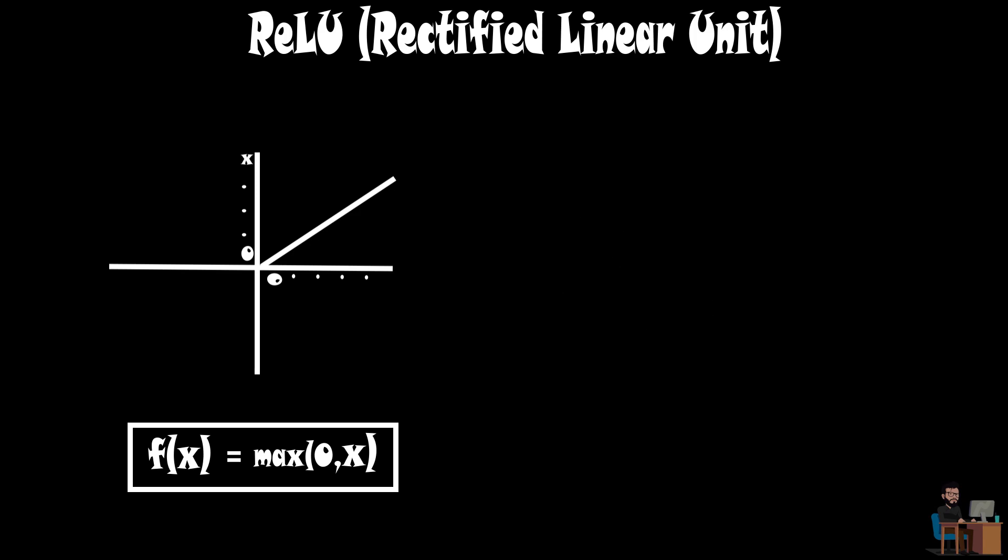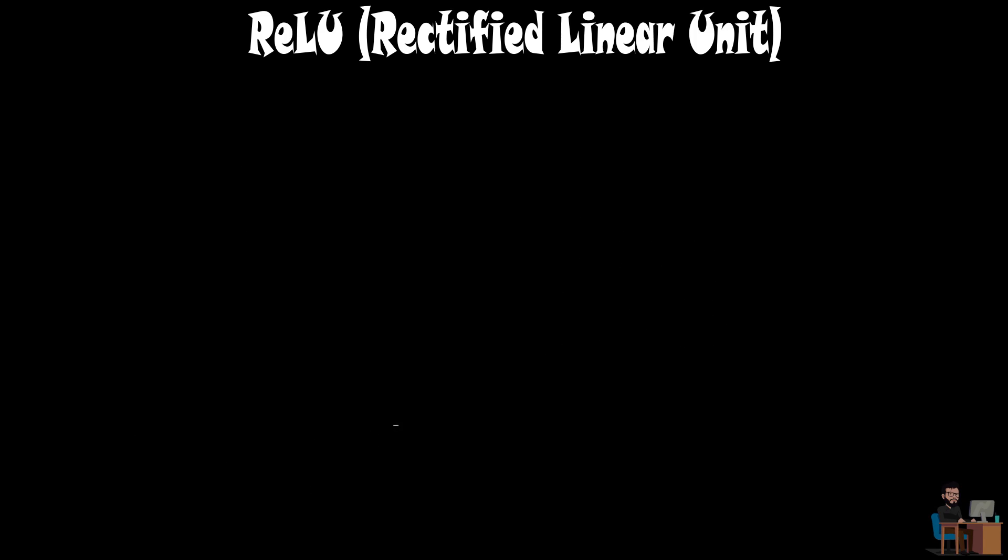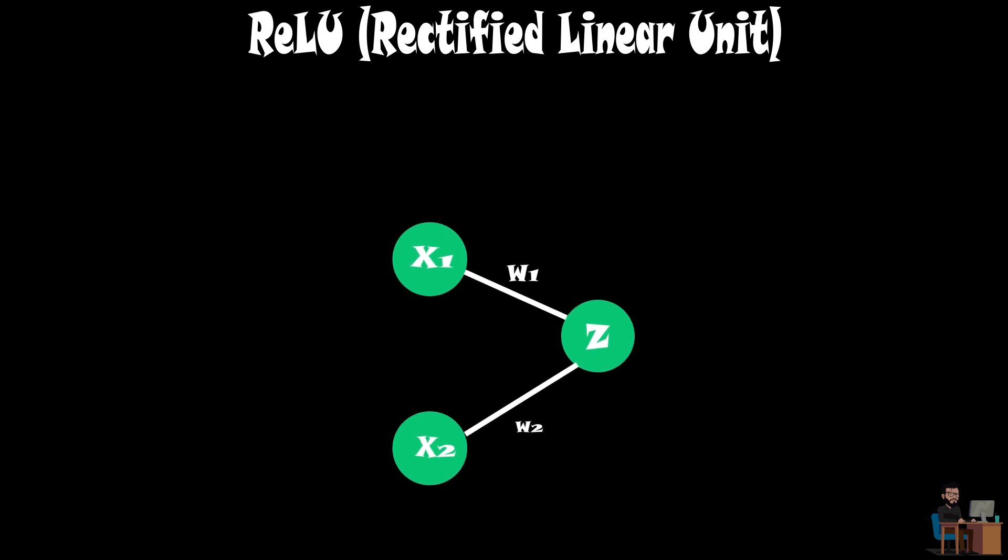Let's see how ReLU actually works during forward and backward pass with this simple example. The input to z is the sum of input times weight of previous layer neurons and put into ReLU activation function.